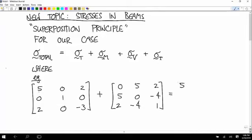You just add them up element by element, so 5 plus 0 is 5, 0 plus 5 is 5, 2 plus 2 is 4, 5 plus 0 is 5, 1 plus 0 is 1, 0 plus negative 4 is negative 4, 2 plus 2 is 4, 0 minus 4 is minus 4, and then minus 2.